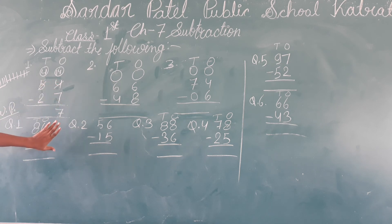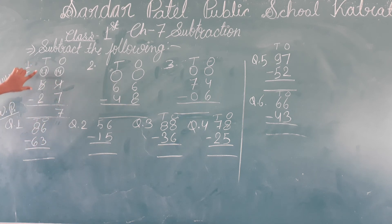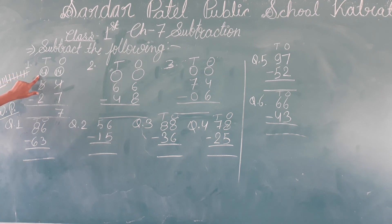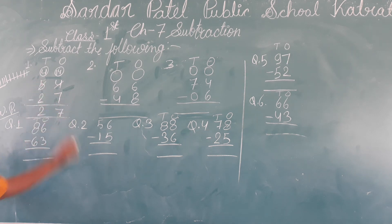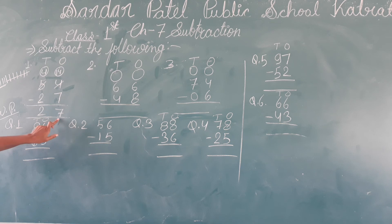Now we have done the ones place. We will do the tens place. Which number will we consider? We write what is in the circle — it is 4 (since we borrowed 1 from 5, it became 4). So 4 minus 2 is 2. So the answer is 27.